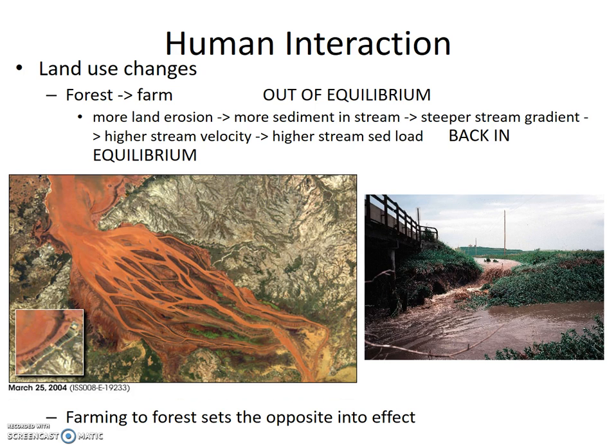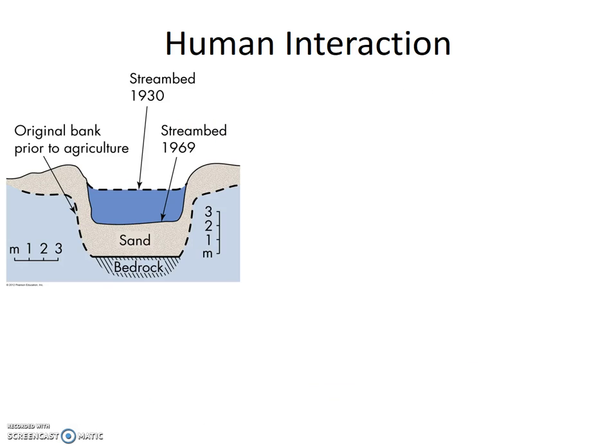The elevation of the streambed decreases. And as the base level is still the same, the gradient will decrease, causing the velocity of the stream to decrease until it reaches a new equilibrium with its new sediment supply. To illustrate this, here is a cross-section of the stream. You have the original bank prior to agriculture. This area was a forest before it became a farm, probably just prior to 1930, when the cross-section shape of the streambed drastically changed. Farming became unprofitable and some forests returned around 1969, and again the cross-sectional shape of the stream changed to the middle thin black line.